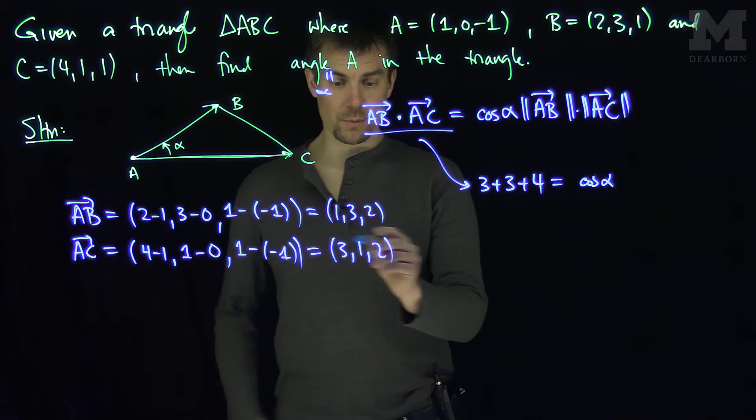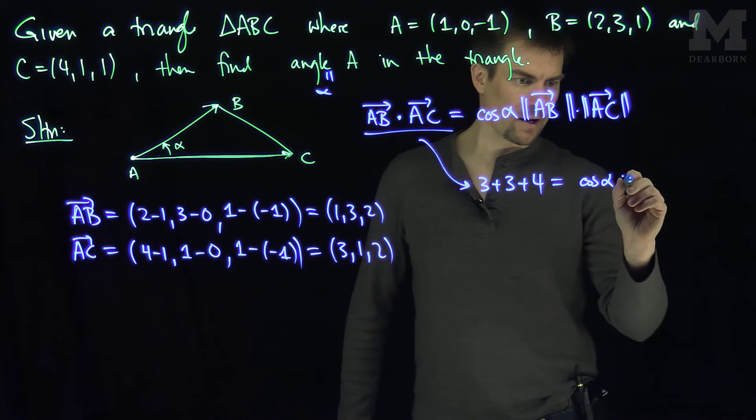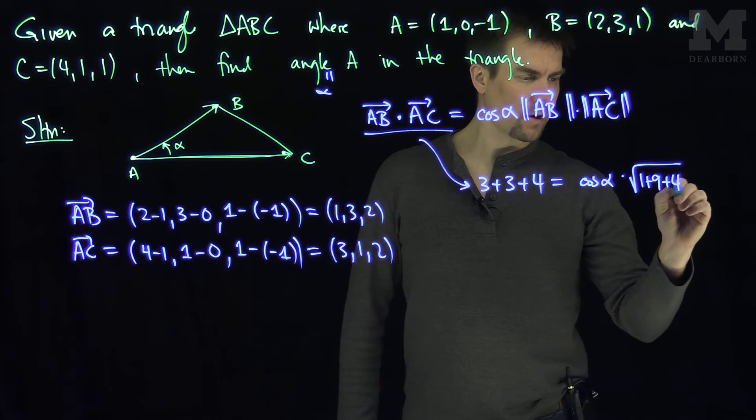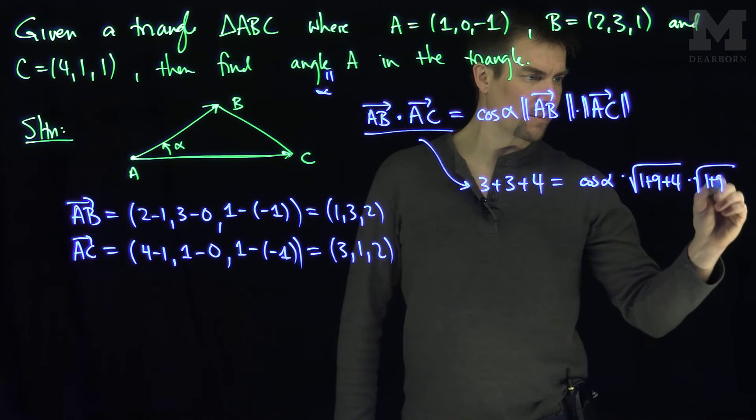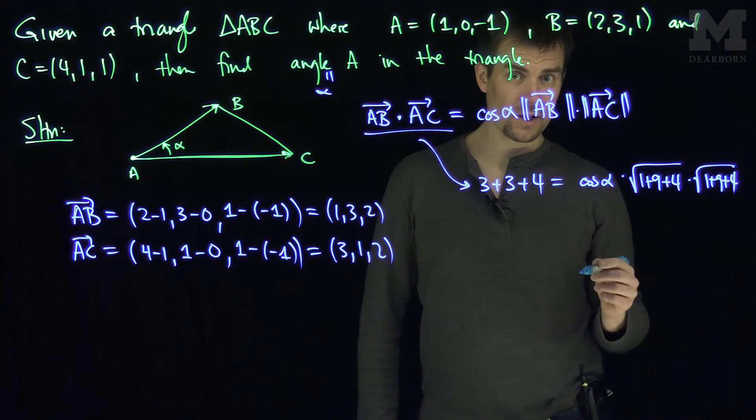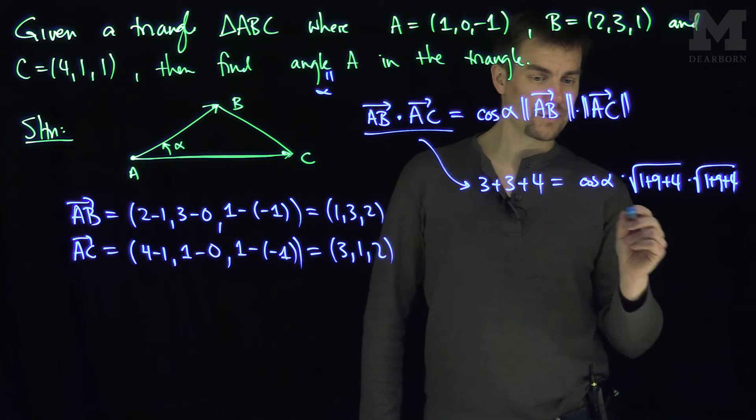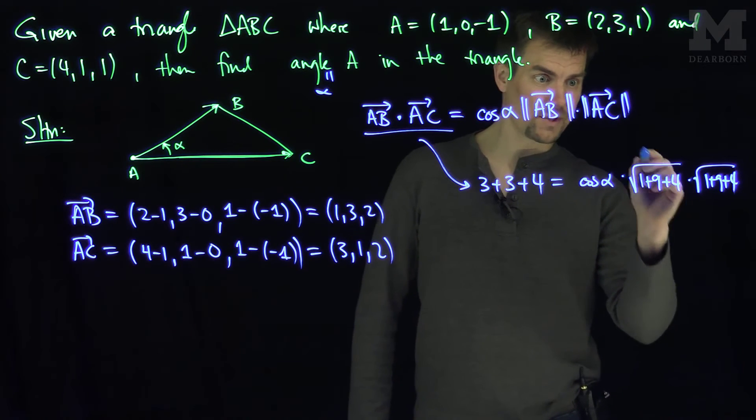Now what's the length of this first, well, these vectors are the same length. Actually, we're lucky there. It's going to be the square root of 1 plus 9 plus 4, times the square root of 1 plus 9 plus 4. Of course, that's root 14, right? So I have root 14 and root 14, so that's just going to be root 14 times root 14, which is 14.